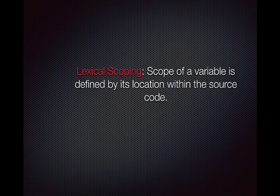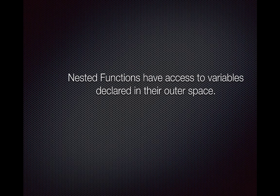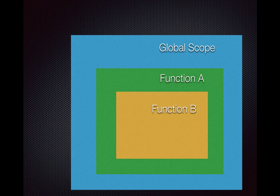Like many other languages, JavaScript follows lexical scoping, which means the scope of a variable is defined by its location within the code. The location where you define your variable is very important. The mantra of scoping in JavaScript is: nested functions have access to variables declared in their outer scope. We're gonna come back to this statement, but let's first understand how it works.